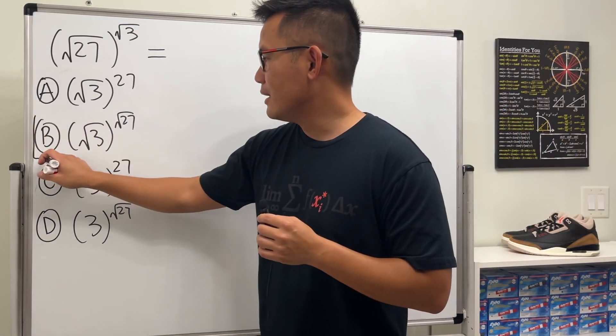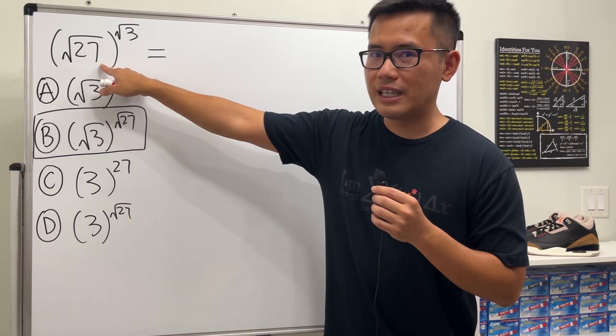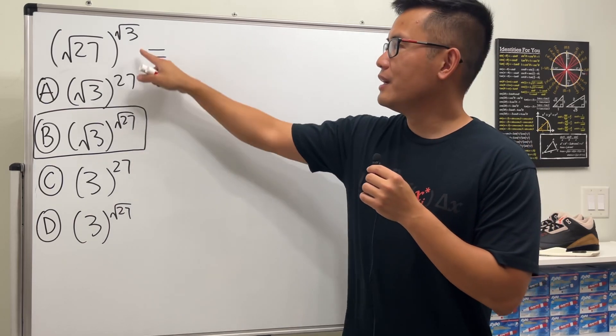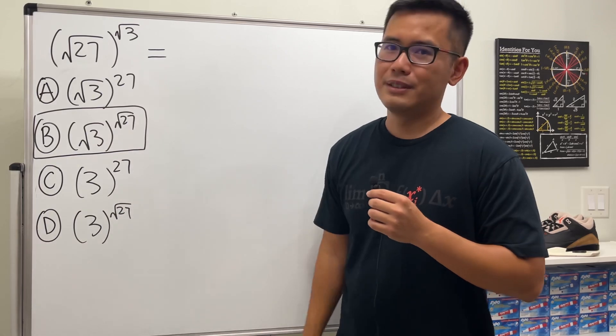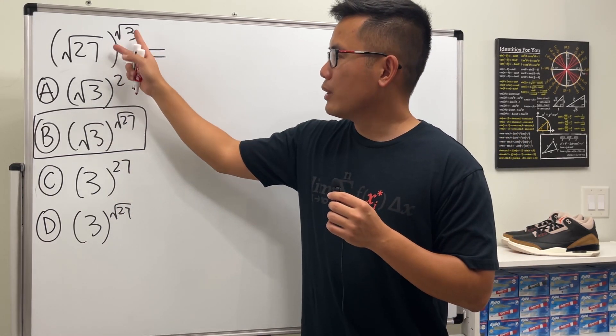Done? Okay, let me tell you the answer is B. And this is super cool because you see, originally the base is square root of 27 and now it becomes the power, and originally the power is square root of 3 and now it becomes the base. Yeah, in this particular case we just switch the base and also the exponent.